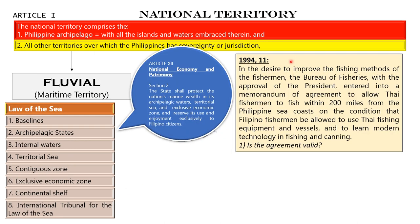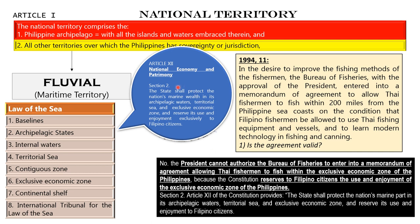The bar exam question I am referring to was asked in 1994, number 11: In the desire to improve the fishing methods of the fishermen, the Bureau of Fisheries, with approval of the President, entered into a MOA to allow Thai fishermen to fish within 200 miles from the Philippine sea coast, on condition that Filipino fishermen be allowed to use Thai fishing equipment and vessels and learn modern technology in fishing and canning. Question: is the agreement valid? The answer is definitely no, because it violates Section 2 of Article 12. The President cannot authorize the Bureau of Fisheries to enter into a MOA allowing Thai fishermen to fish within the exclusive economic zone of the Philippines, because Section 2 is a mandate — its use and enjoyment is reserved to Filipino citizens.